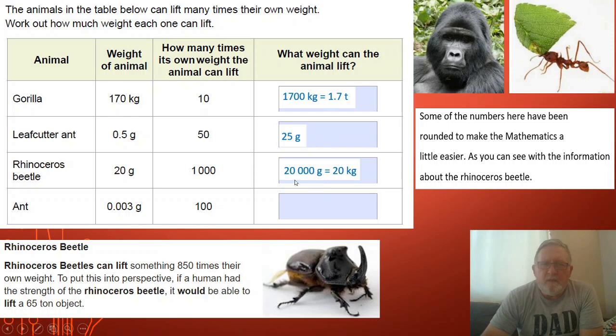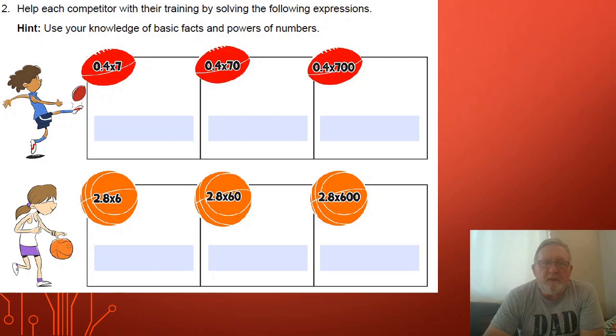Now I've put in a bit of extra information here. 20 grams times a thousand is 20,000 grams which is 20 kilograms. That's quite incredible. So the rhinoceros beetle can lift 850 times their own weight. That came off the internet. They've just set a thousand for this particular exercise to make the maths a bit easier, but it's still an interesting fact that it can lift many times its own body weight. And the final one, 0.003 of a gram multiplied by 100 is three grams.